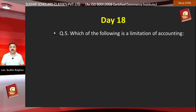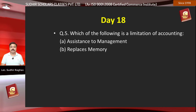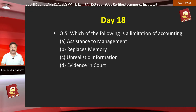Question number 5: Which of the following is a limitation of accounting? Option A, assistant to management; Option B, replaces memory; Option C, unrealistic information; Option D, evidence in court. These were our five questions for today. Search their answers and send them in. Along with the new 5 questions, these are today's tasks.